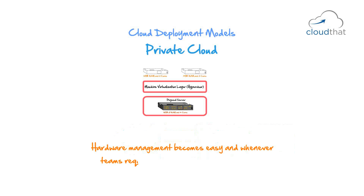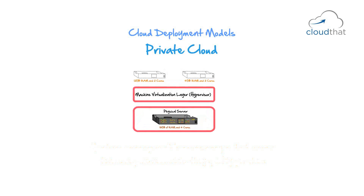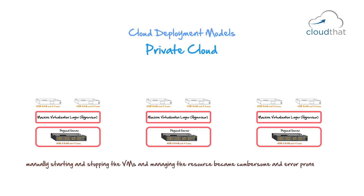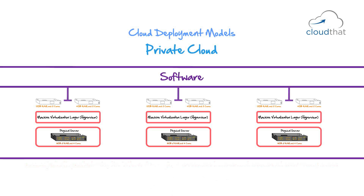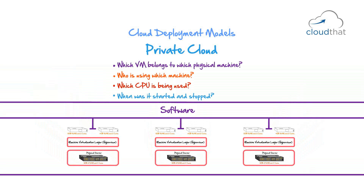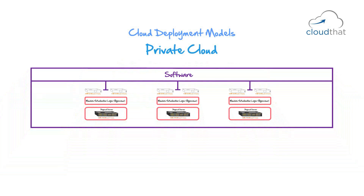Hardware management becomes easy and whenever a team requires resources, they quickly get them. Companies started buying big servers and providing virtual machines out of them. But as the number of virtual machines grew, manually starting and stopping the VMs and managing resources became a cumbersome and error-prone process. This led to the introduction of a software layer on top of the virtualization layer that figured out which VM belongs to which physical machine, who is using which machine, which CPU is being used, when it started and stopped, and so forth. This led to managing VMs going from a manual process to an automated one.